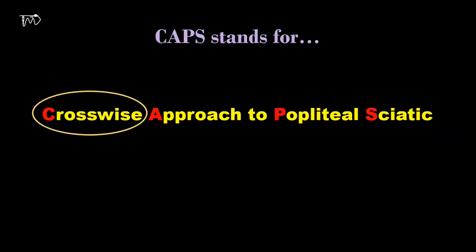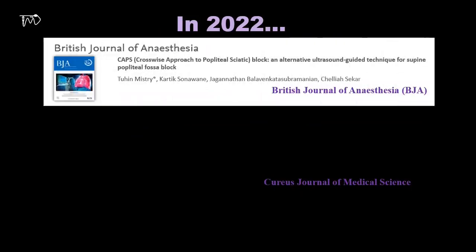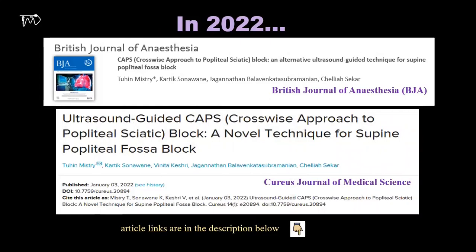The CAPS acronym stands for Crosswise Approach to Popliteal Sciatic. Here, crosswise means across or transverse. It is about an alternative approach of popliteal sciatic nerve block in supine position. Recently we have published the anatomical and technical details of the CAPS block including a case series, and I will share the links in the description.